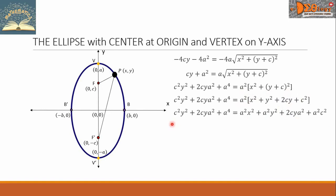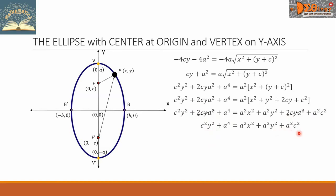Let us observe the left and right sides. There is a 2cya² on the left and also the same term on the right — we can cancel these terms. From here, let us put together all terms with x or y, and all constants on the left side. The c²y² has a y variable, so we transpose it to the right — from positive it becomes negative. And a²c² is a constant, so we transpose it to the left — from positive it becomes negative.